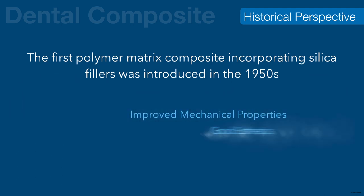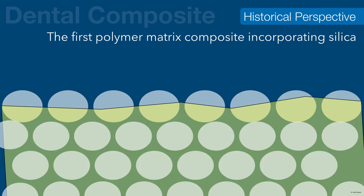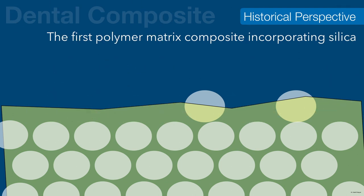Reinforcing ceramic fillers, principally containing silica, were then added to the composition. These composites showed improved mechanical properties and good aesthetics, but they did not bond to the tooth structure and still exhibited significant polymerization shrinkage caused by the methyl methacrylate monomer. There was also no significant bonding between the silica particles and the polymer matrix, so the filler remained unbonded in the matrix, leading to poor wear resistance as particles easily dislodged during function.